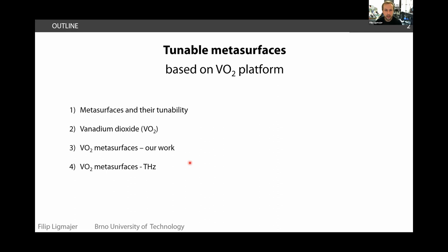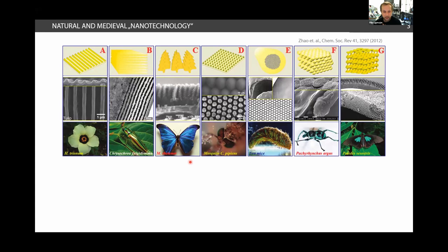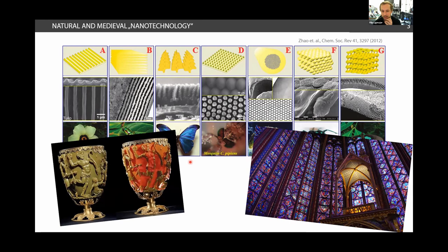As you have seen like half an hour ago, whenever you nanostructure matter, then you can get very interesting interactions of this matter with light and very interesting optical results. Nature does it in some situations, but also people have done this in past, and here you can again see some colored glass windows and a very famous Lycurgus cup, which is well-known in the plasmonics community.